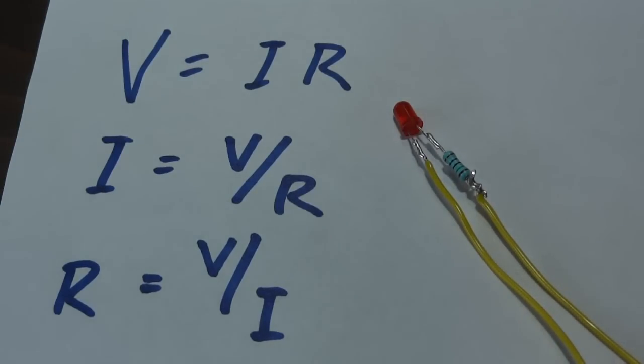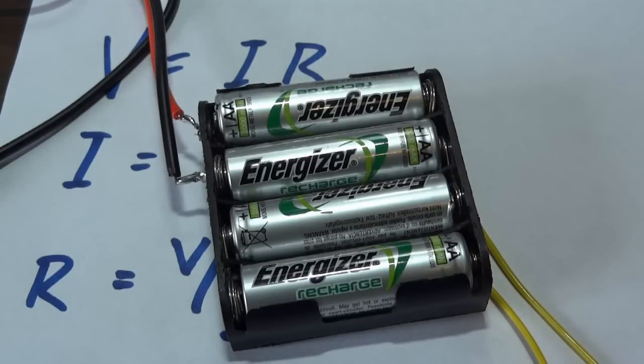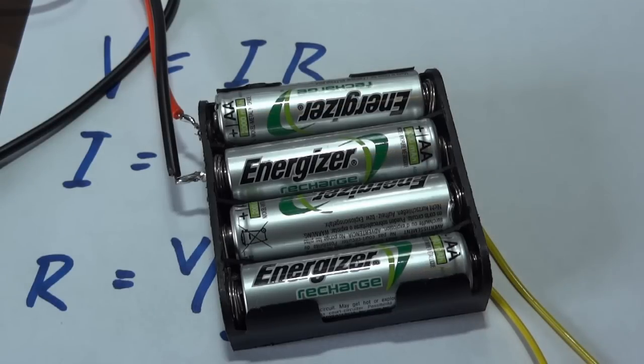So when I had the LED on earlier, I was actually using this pack of batteries, which are actually rechargeable cells at 1.2 volts each, and they're wired in series like a string of sausages, so that adds up to 4.8 volts, although when I actually measured it, it was near 5 volts.